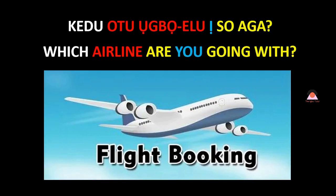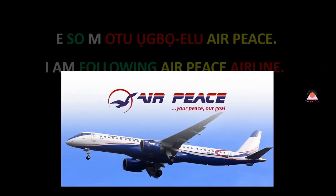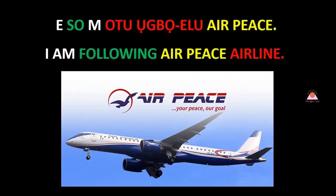The next question is 'kedu otuboe lu iso aga?' From the color, you can see that 'otuboe lu' is airline. 'Kedu otuboe lu iso aga?' means 'which airline are you traveling with?' The answer is 'esom otuboe lu Airpeace' — I am following Airpeace airline on this journey.